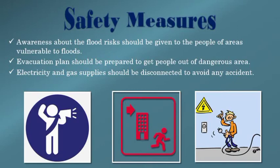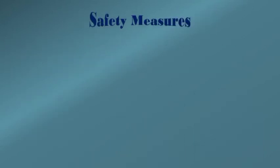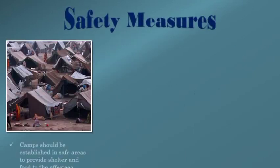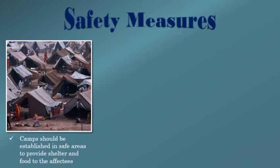ہمیں چاہیے کہ ہم electricity اور gas کی connections کو disconnect کر دیں تاکہ current پانی میں شامل نہ ہو جائے۔ اگر poles گریں گے تو بجلی کی تاروں میں current ہوگی اور وہ پانی میں پھیل سکتی ہے — اس سے بڑے پیمانے پر تباہی اور زیادہ جانی نقصان ہو سکتا ہے۔